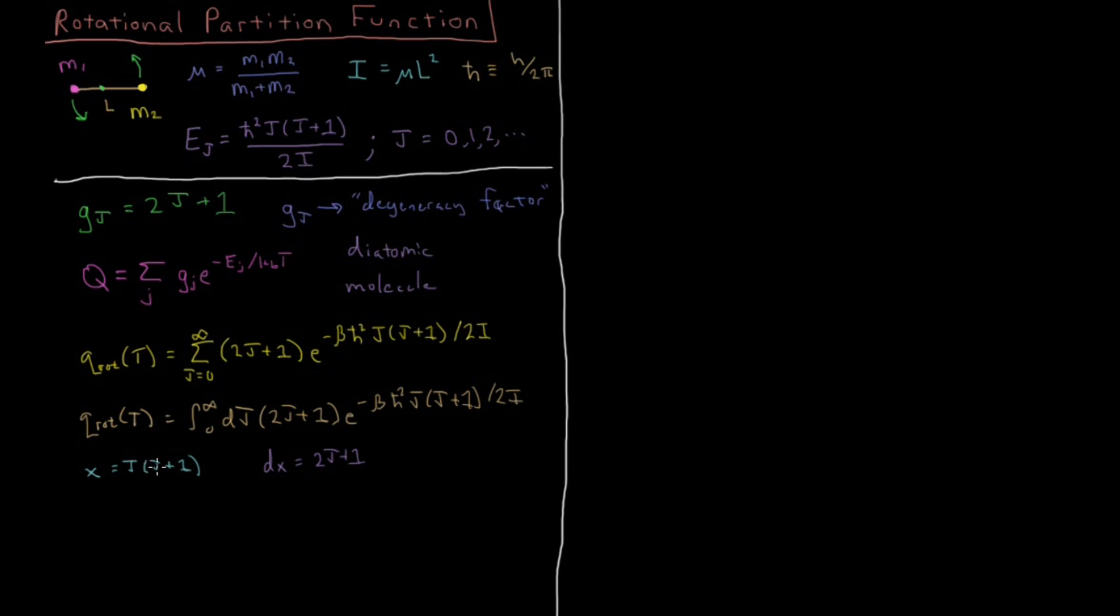If you take the derivative of j times j plus 1, you'll get j squared plus j, which the derivative of that would be 2j plus 1. And then 2j plus 1 times dj. So to complete the substitution, dj equals dx over 2j plus 1.